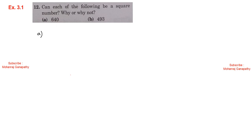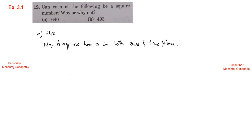Exercise 3.1, sum number 12: Can each of the following be a perfect square? First, 640 — No, because a square number ending in 0 must have 0 in both the ones and tens place, which 640 fails. Second, 493 — No, because no perfect square has 3 in the ones place.